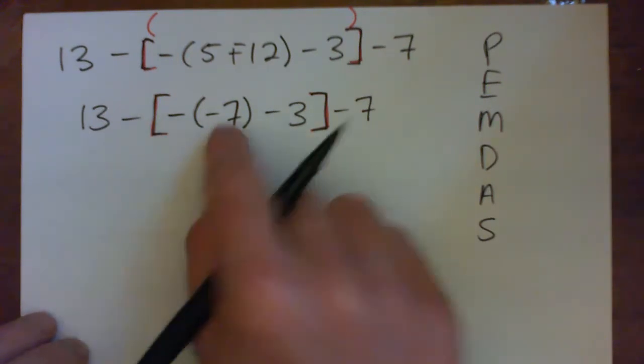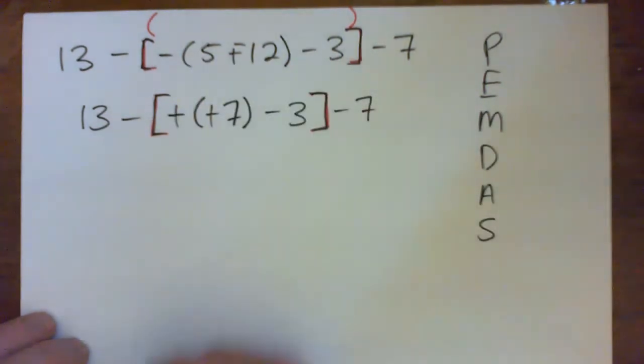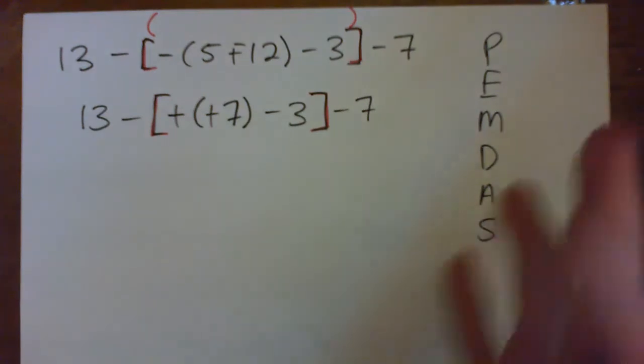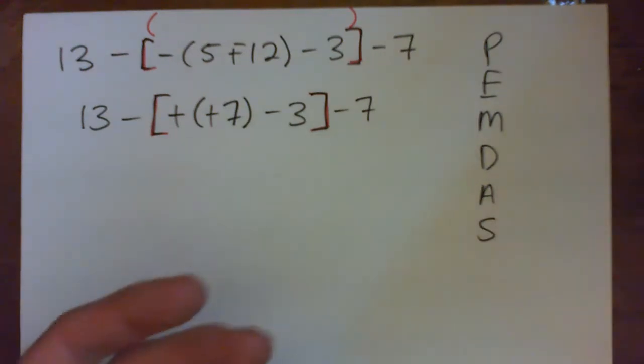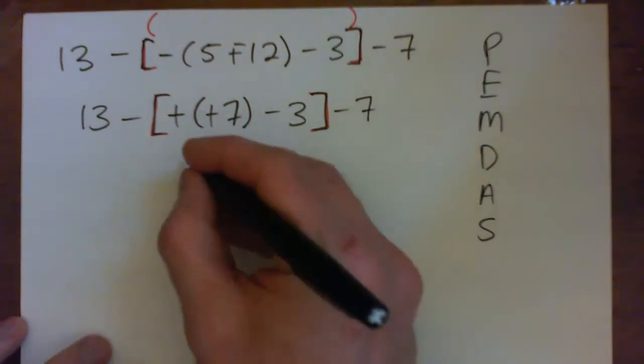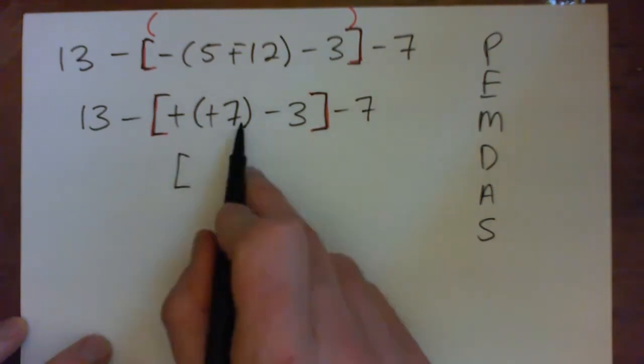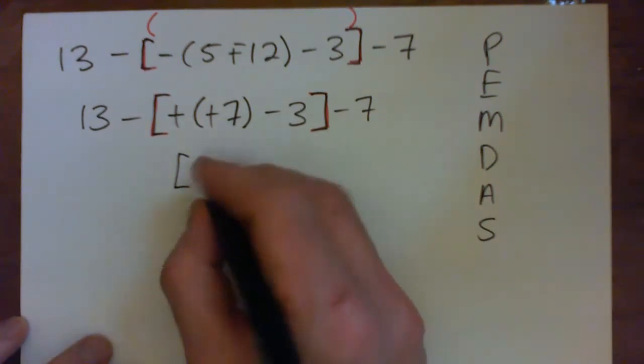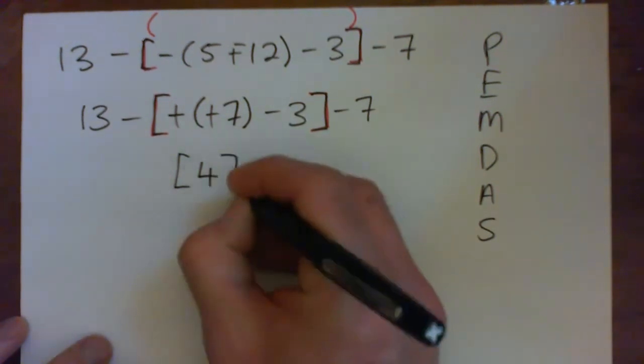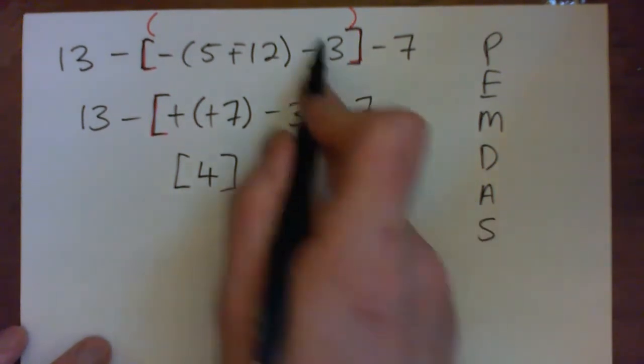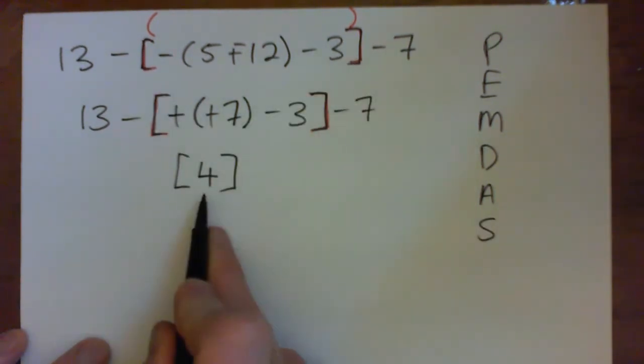Now negative, negative, we can change that to plus, plus. Subtract a negative, a debt of 7, it's like giving you 7 dollars. If you cancel a bill, it's like giving money, right? So inside here, we have a positive 7 minus 3. 7 minus 3 is 4. You should work out the inside of this thing to wind up being 4.